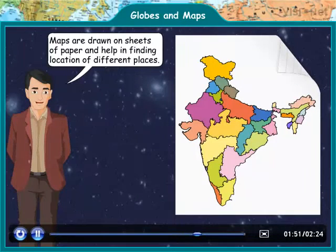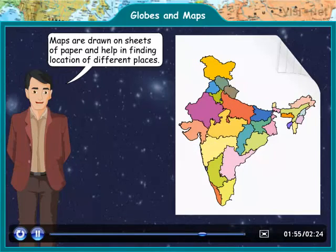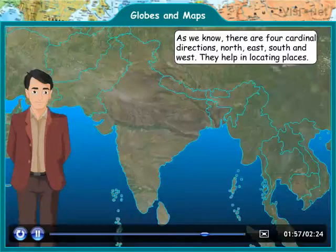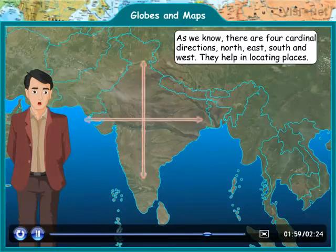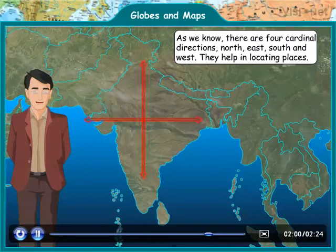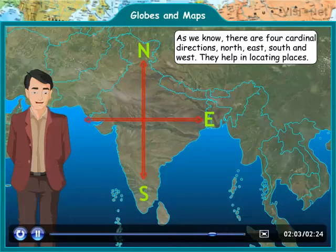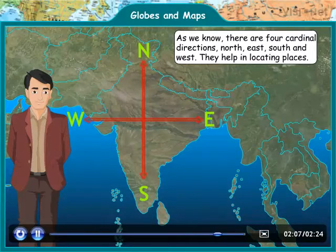Maps are drawn on sheets of paper and help in finding the location of different places. As we know, there are 4 cardinal directions: North, East, South, and West. They help in locating places.